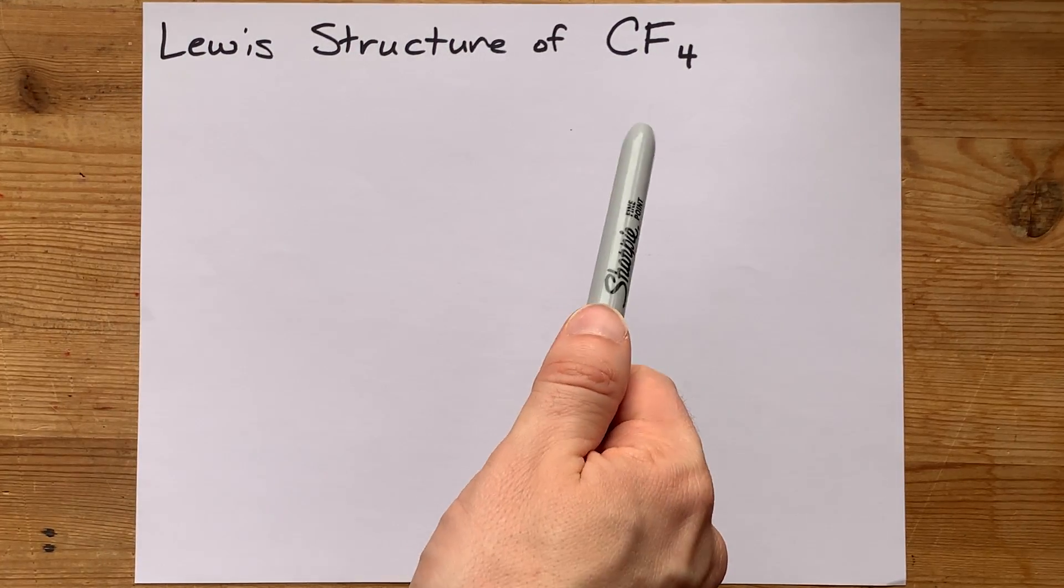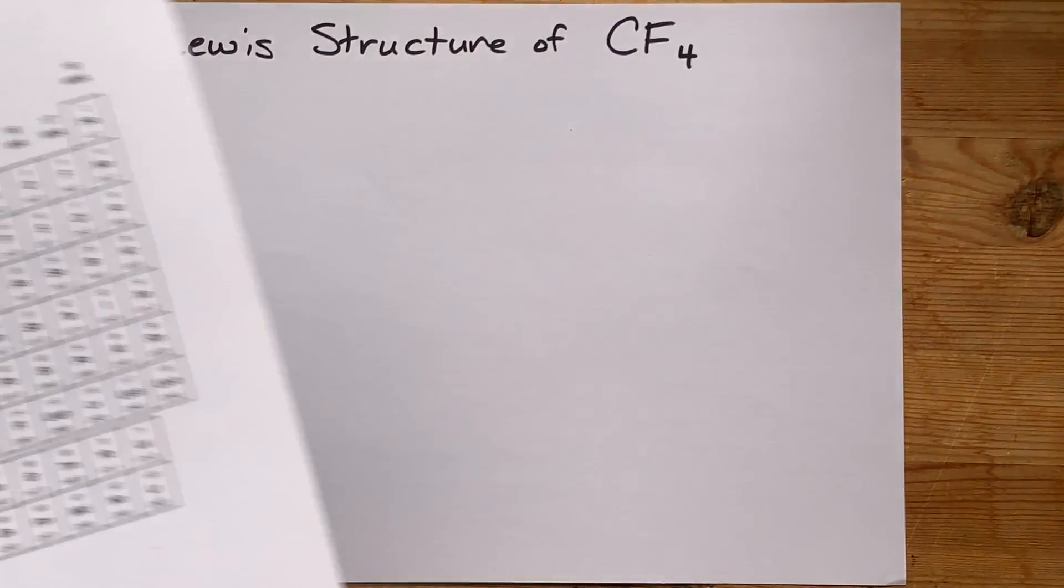We're going to draw the Lewis structure for CF4, or carbon tetrafluoride.